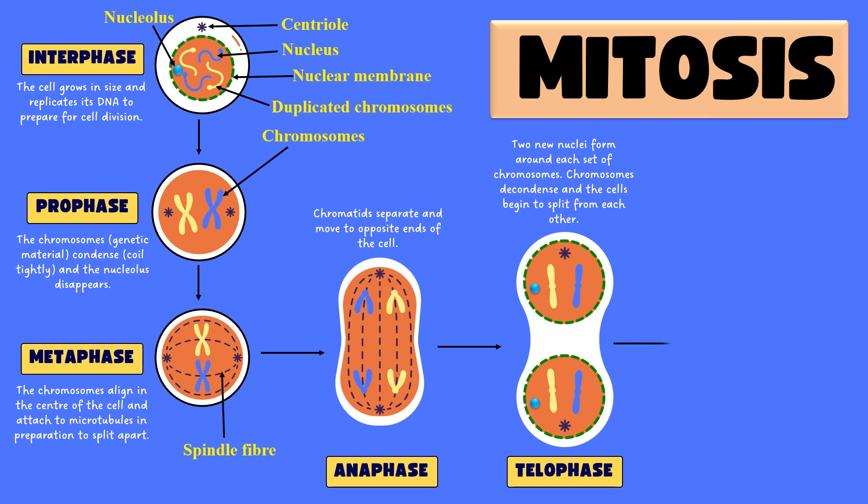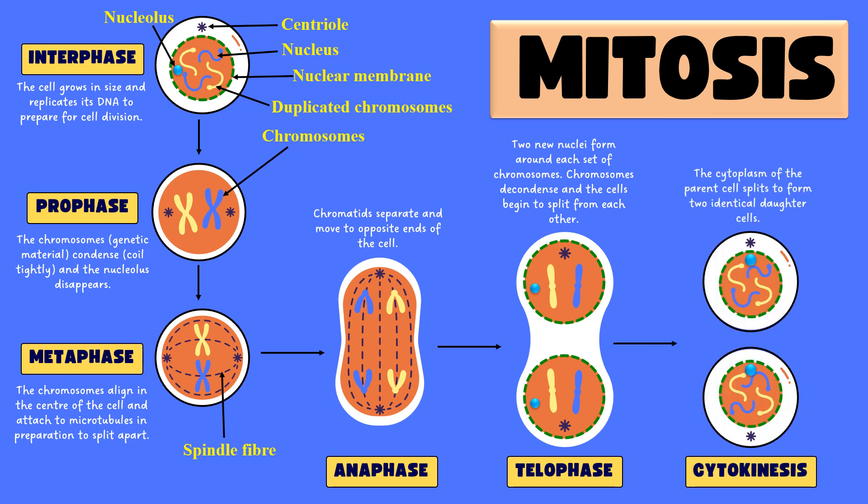The next phase of mitosis is cytokinesis. Here, 'cyto' means cytoplasm and 'kinesis' means division. After telophase, we have two nuclei but the cytoplasm is not divided yet. During cytokinesis, the cytoplasm also divides and we get two new daughter cells, as you can see. These daughter cells have the same chromosome complement as the parent cell, which is why mitosis is also known as equational division.